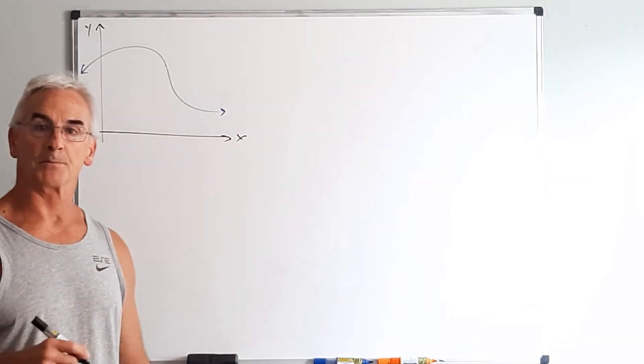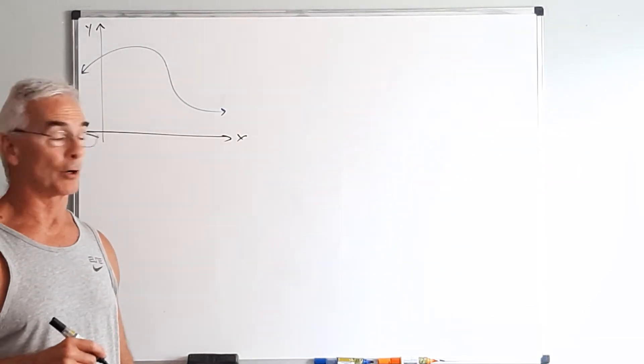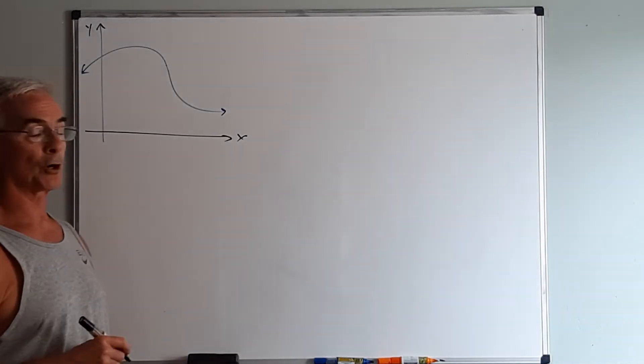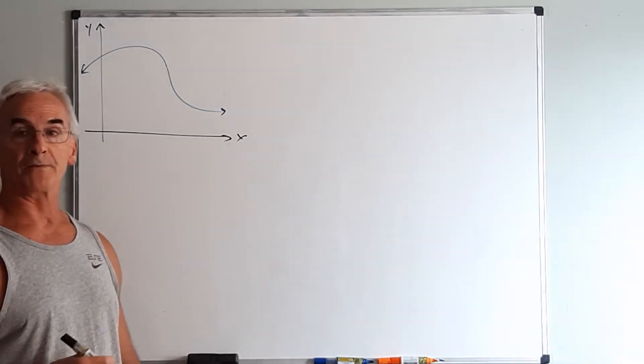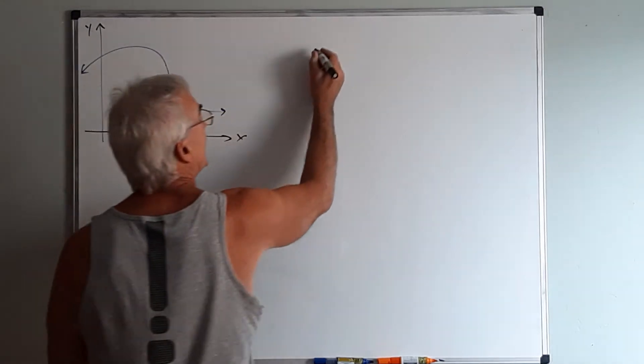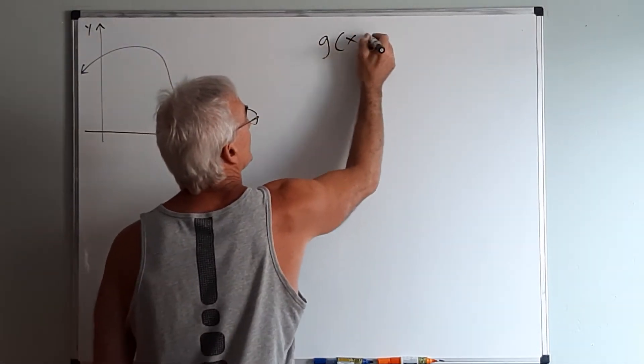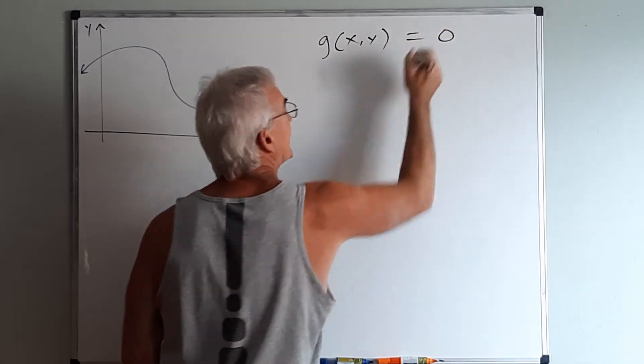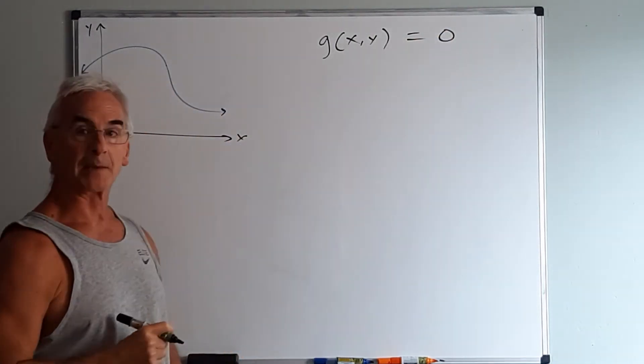We would like to show the relationship between the gradient vector and a curve. Now let's suppose I have a curve in two dimensions. It could be y equals f of x, it could be the equation of a circle, it could be anything that I can rewrite as g of xy equals zero by putting everything on the same side of the equation.